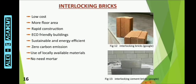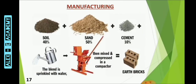In low-cost houses, the best material for wall construction is interlocking bricks. Interlocking bricks are an enhanced form of conventional clay bricks. Each brick is consistently designed to lock itself to the other bricks without use of mortar. Interlocking bricks are compressed and stabilized earth bricks which contribute to the strength of the structure. The advantages include low cost, more floor area, rapid construction, eco-friendly nature, zero carbon emission, and no need for mortar. High quality interlocking bricks are manufactured from cement, sand, and soil with 20% clay content, and compression is achieved by a hydraulic compression system.